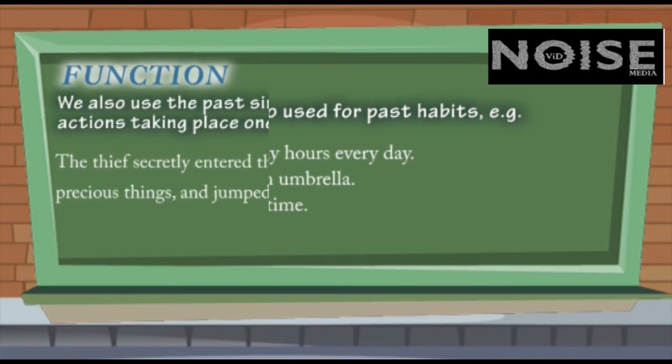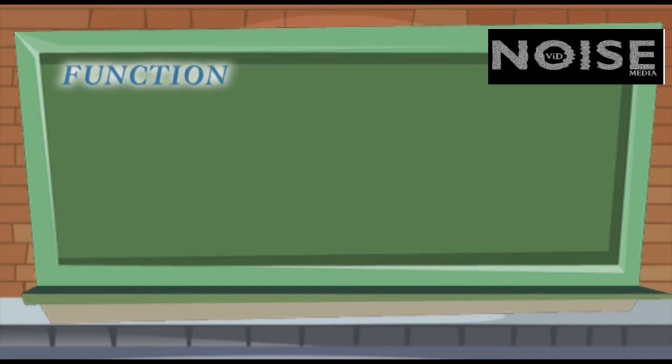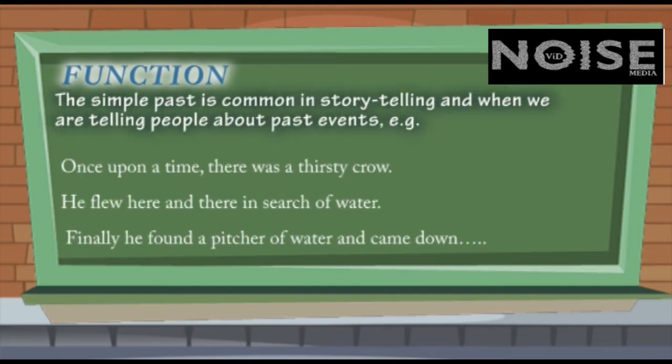We also use the past simple to refer to a series of actions taking place one after another. For example, The thief secretly entered the room, opened the locker, took all the precious things, and jumped out of the window. The simple past tense is common in storytelling and when we are telling people about past events. In your life, you narrate things that happened to you, the things that you experienced. In such situations, you must use past tense.